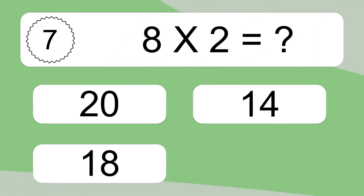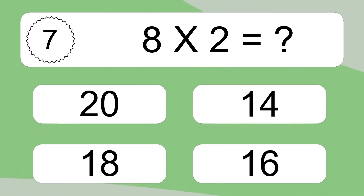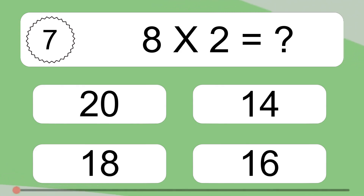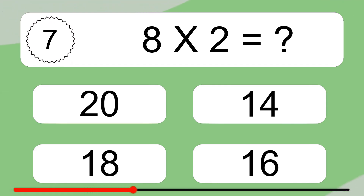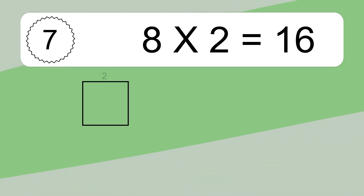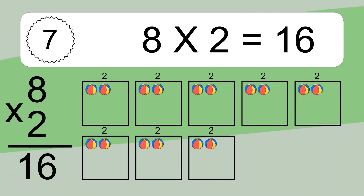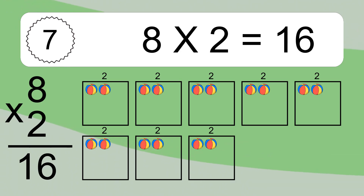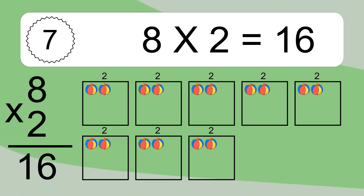8 times 2 equals what? We have 8 boxes, and each box has 2 colorful balls inside. If you count all the balls in all the boxes together, you will have 8 times 2 balls. This equals 16 balls.